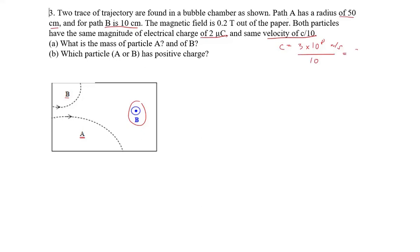So we're just gonna get 3 times 10 to the 7 meters per second. Okay so now we are tasked to find the masses of particles A and B.